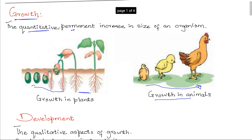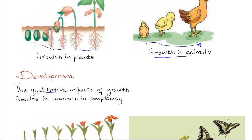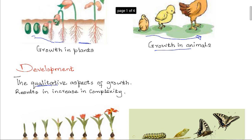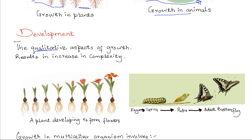Development, on the other hand, is a qualitative aspect of growth. As there is change in mass or height, there are also certain changes in complexity as an organism grows. These changes are what we refer to as development. Like here, a plant is developing to form flowers. There may not be an increase in mass between one stage and another, but the formation of new structures and the increase in complexity of the organism constitutes development.